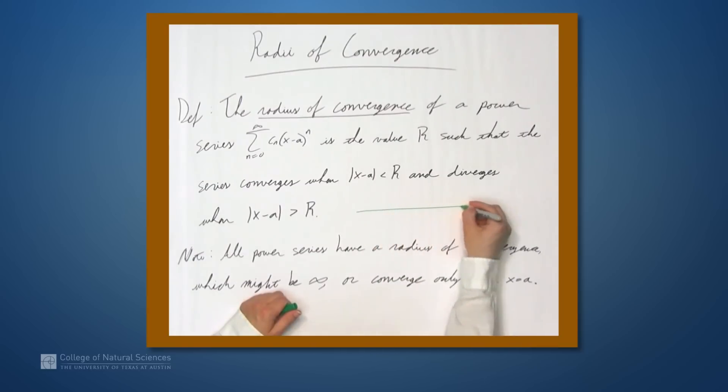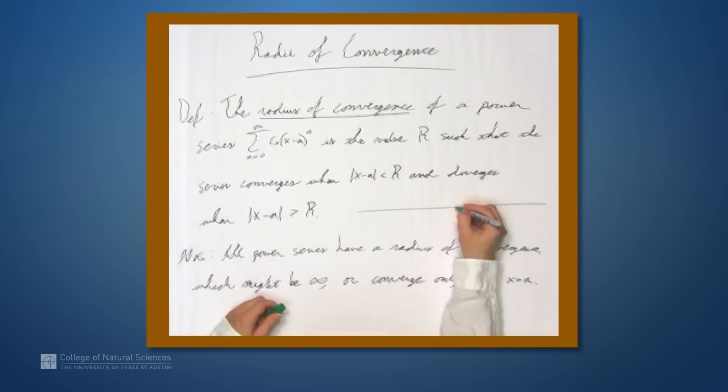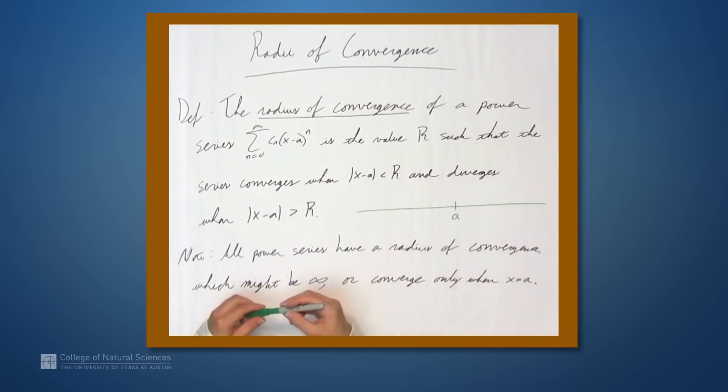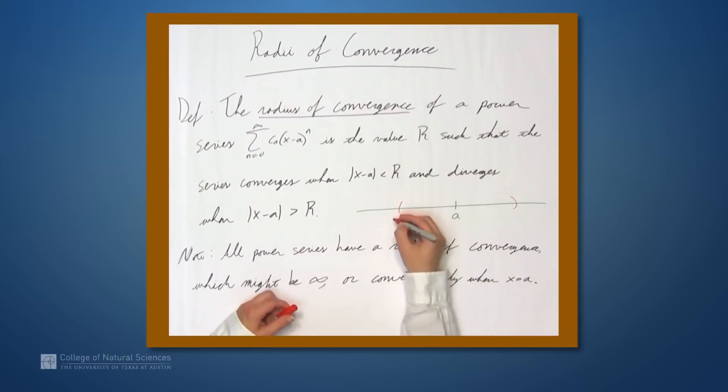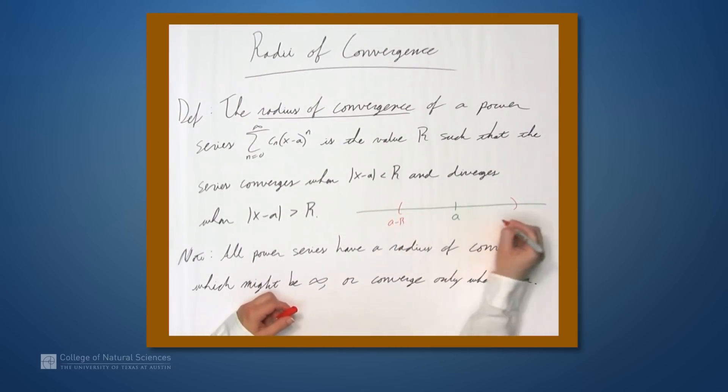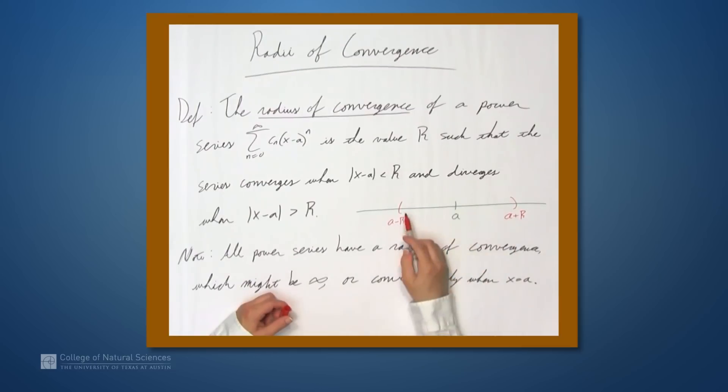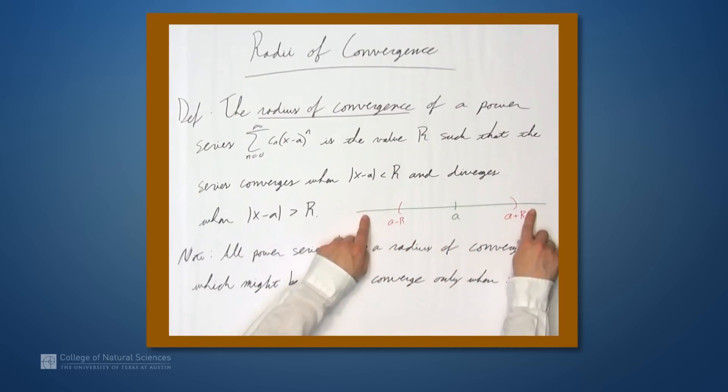In a picture, if we think of the real line like this, we've got a right here. We're saying that r is a value such that the series converges everywhere in this interval. So you start at a and you shift less than r in either direction, you converge. If you shift more than r in either direction, then you diverge.